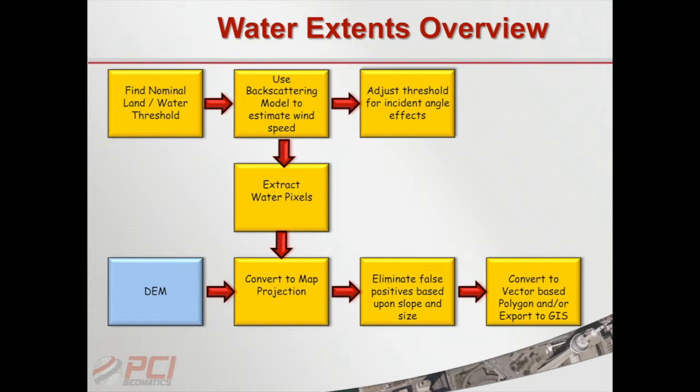The backscattering model was modified in Canada — I think Paris Vachon worked on it quite a bit. Basically, when we know the incidence angle, wind speed, and look direction relative to the radar, these models give us some idea of what the backscattering is going to be for C-band data. The problem for us at PCI was we had the opposite situation: we knew the backscattering and the incidence angle, and from that we had to estimate wind speed and wind direction. So we took the backscattering model for water and worked it in inverse.